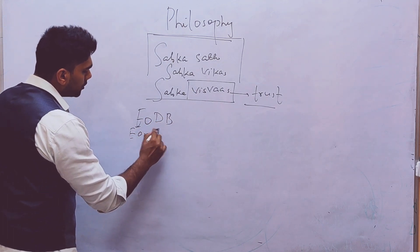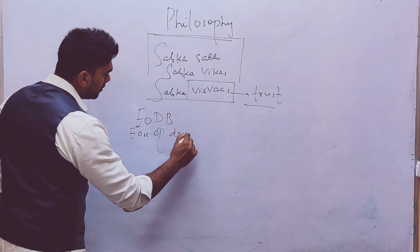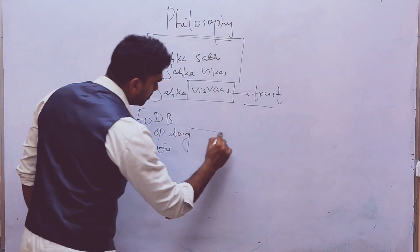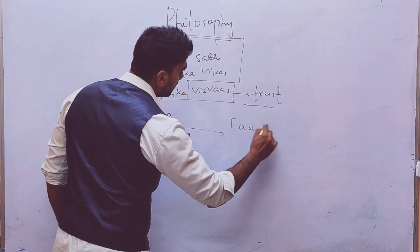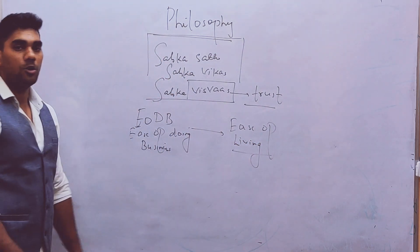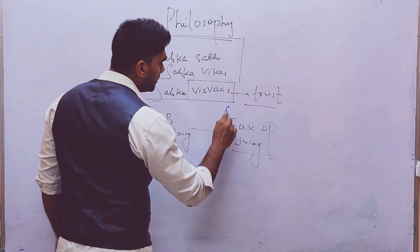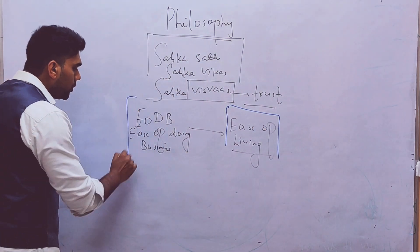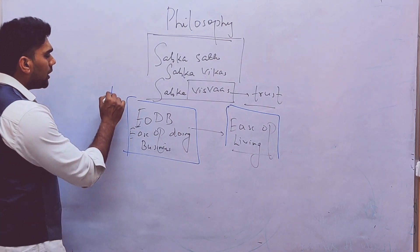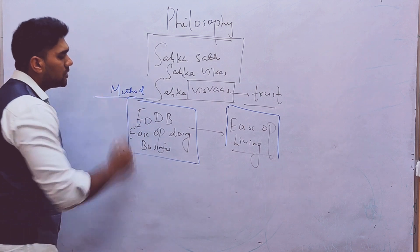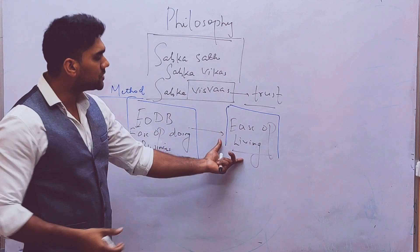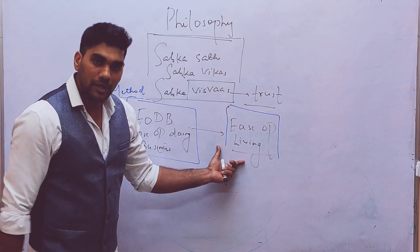I will write it down also. Ease of doing business to ease of living. The government says our objective is ease of living. Ease of doing business can never be the objective. This is always a method.